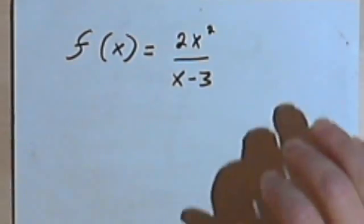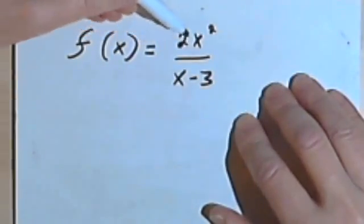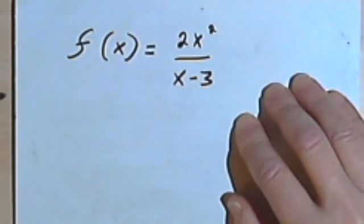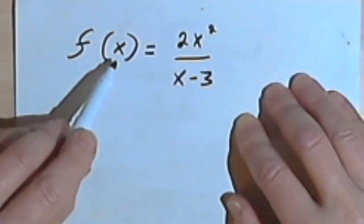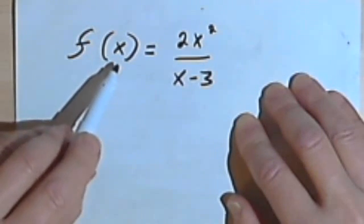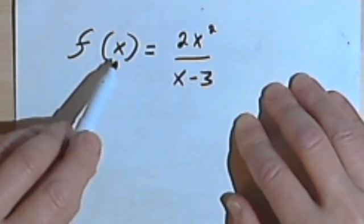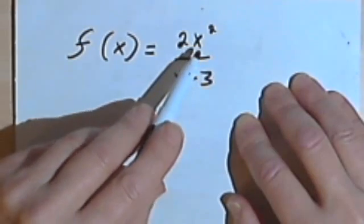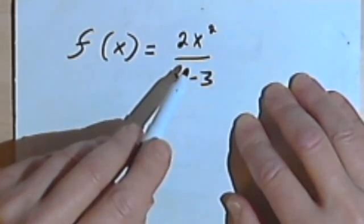Here I've got this function, f of x equals 2x squared over x minus 3. And remember what this means is I can replace the x in the left side of the function with any number I want, and that will tell me what my function equals when instead of an x I have that number.